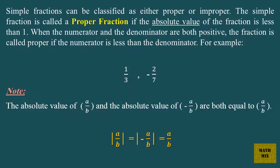Simple fractions can be classified as either proper or improper. A simple fraction is called a proper fraction if the absolute value of the fraction is less than 1. When the numerator and the denominator are both positive, the fraction is called proper if the numerator is less than the denominator. For example, 1 over 3 and minus 2 over 7. Note: the absolute value of A over B and the absolute value of minus A over B are both equal to A over B.